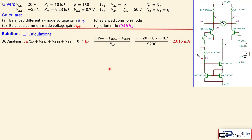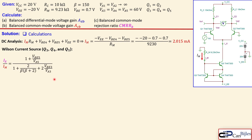Looking at the Wilson current source formed by Q3, Q4, and Q5, there is an expression relating the reference current Im to the tail current Ix. This expression also accounts for early voltages. If the early voltage were infinite, the correction terms would go to zero, giving an ideal ratio of 1 over (1 + 2/beta) times (beta + 2). In our case, we must account for the finite early voltages.